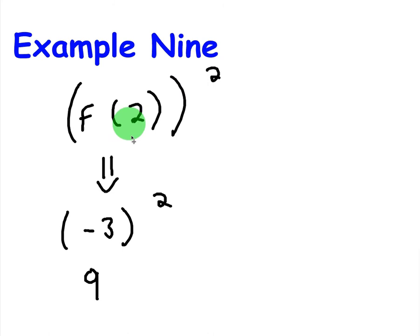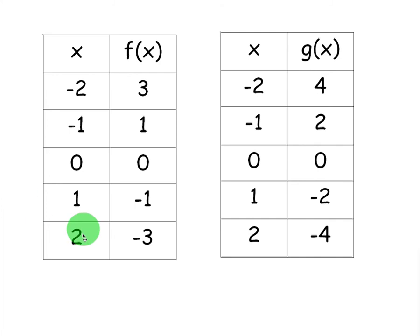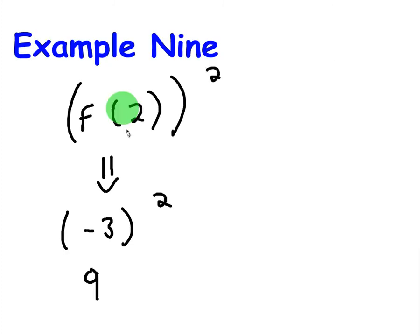So this question says, what is f of 2 squared? All you have to do is look in the chart to see what f of 2 is. Again, it's just a number. So if we look at x and we find 2, f of 2 is just negative 3. So we're going to replace f of 2 with negative 3 and then just square it, and the answer is 9. It's just really, literally that simple.